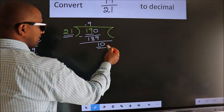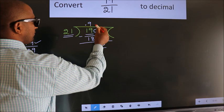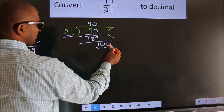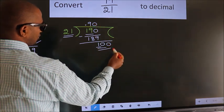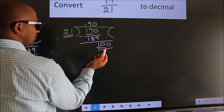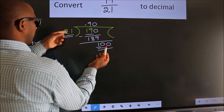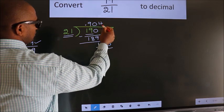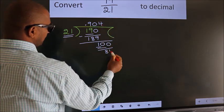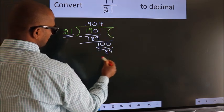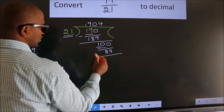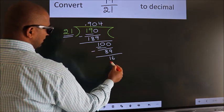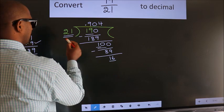To get one more digit, we put 0 here to get 100. A number close to 100 in the 21 table is 21 × 4 = 84. Now we subtract and get 16. Here we have 16, and 16 is smaller than 21.